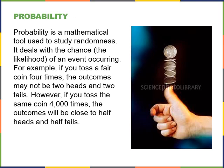Probability is the mathematical tool used to study randomness. It deals with the chance or likelihood of an event occurring. For example, if you toss a fair coin four times, the outcomes may not be two heads and two tails — there's a chance it might be all heads or all tails. But if you flip it 4,000 times, the outcomes will be close to half heads and half tails. If you're curious, go ahead and flip a coin a hundred to two hundred times, log each result, and you'll find it's probably close to 50/50 in terms of probability of getting heads or tails.